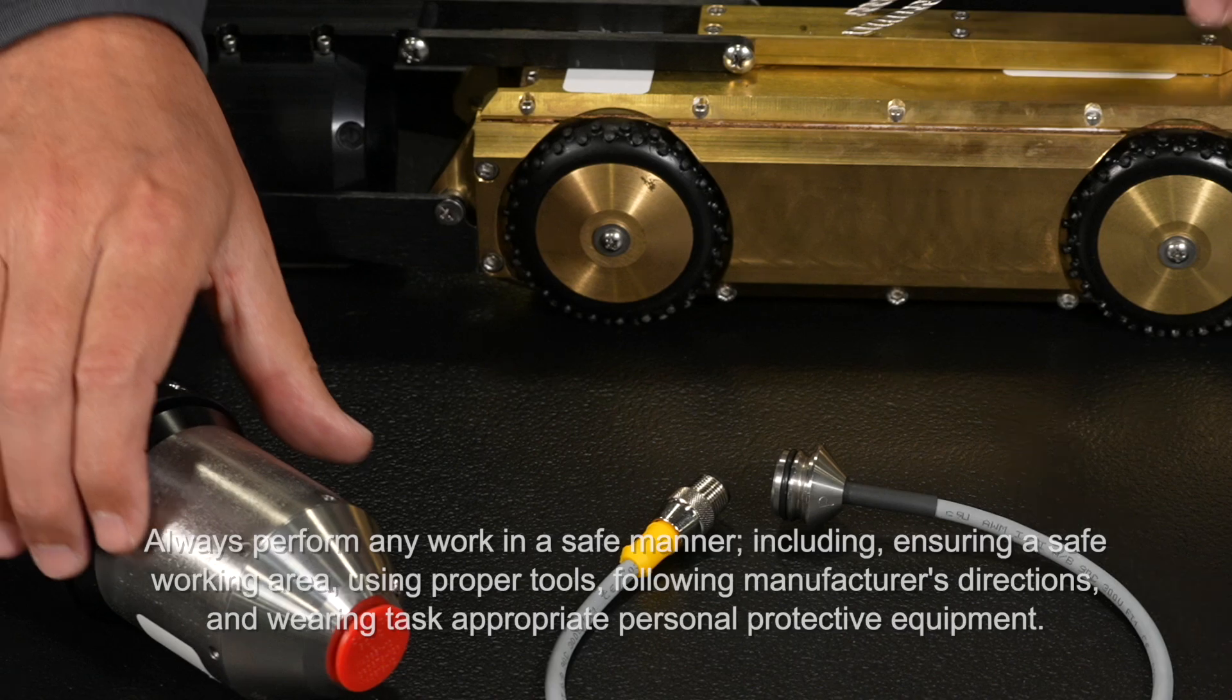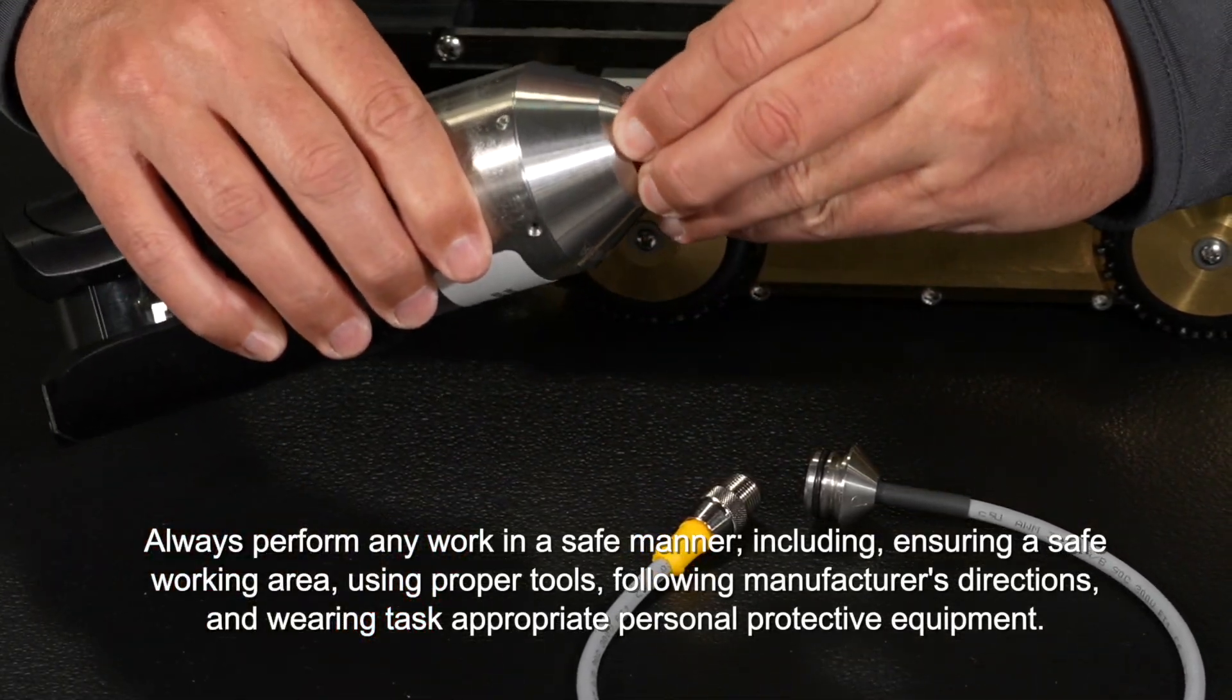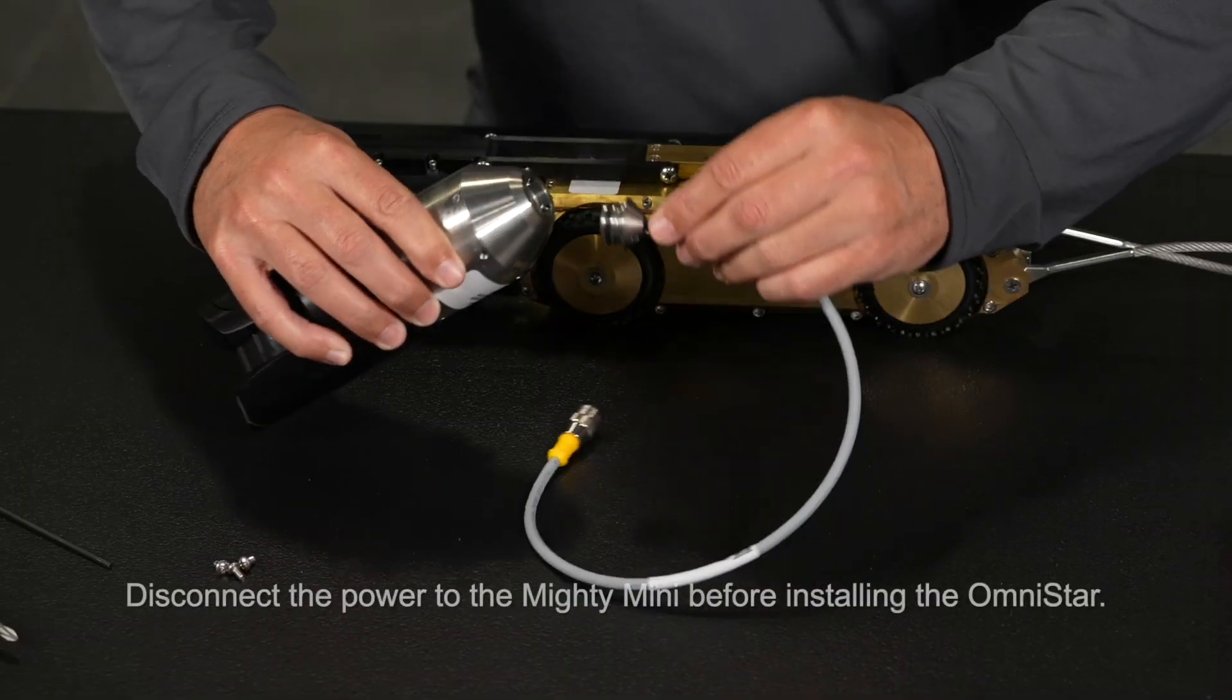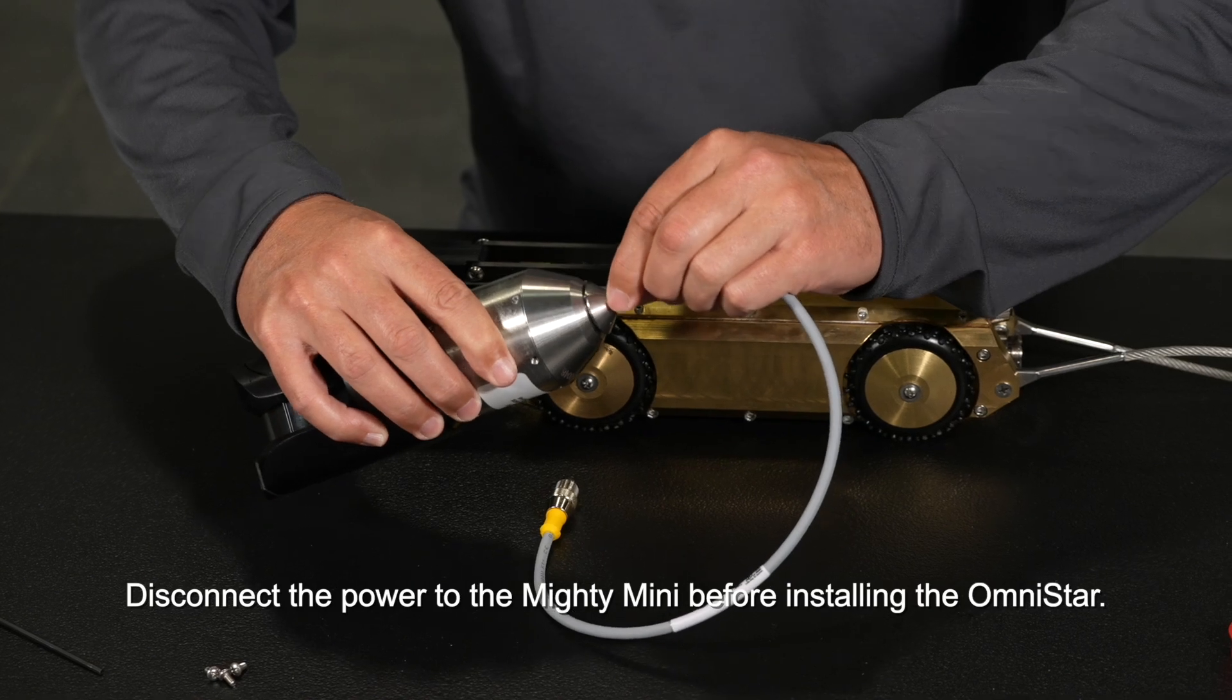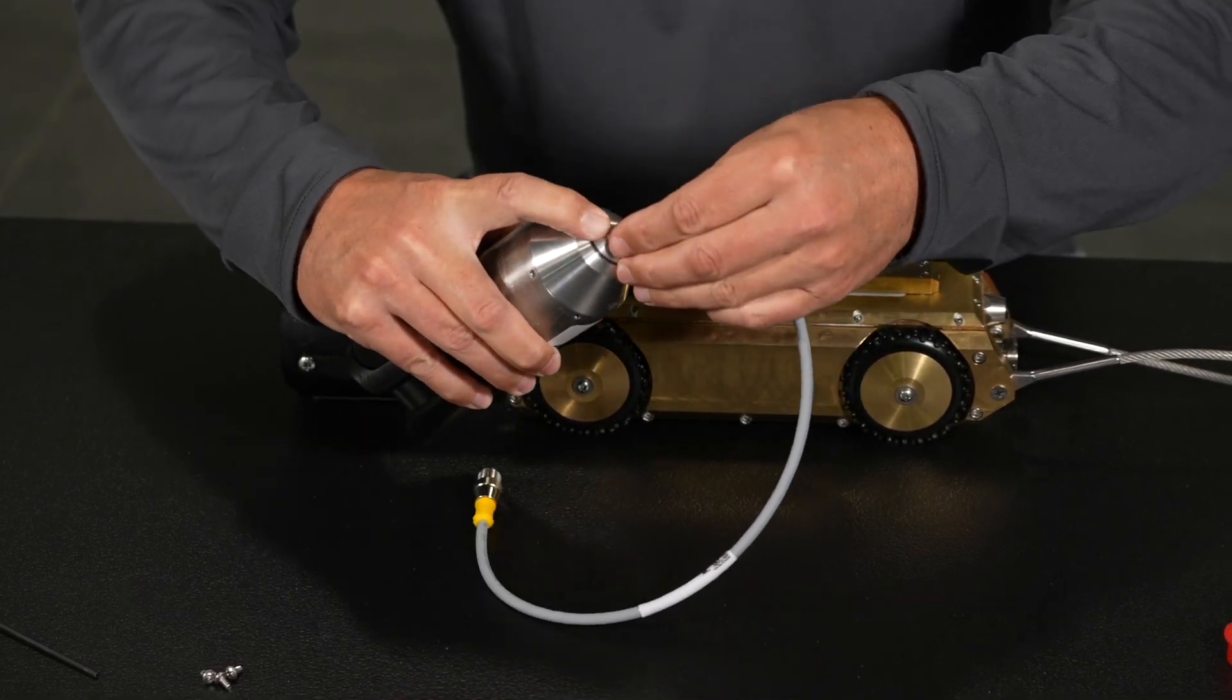To begin, remove the protective cap from the rear of the Omnistar probe. Take the camera power cable and connect the tapered end into the back of the Omnistar unit and hold in place.